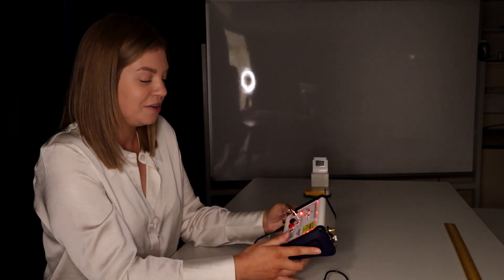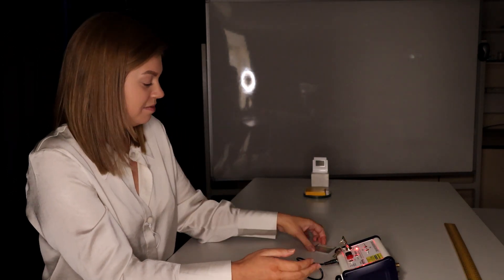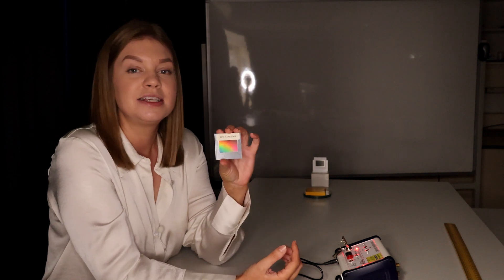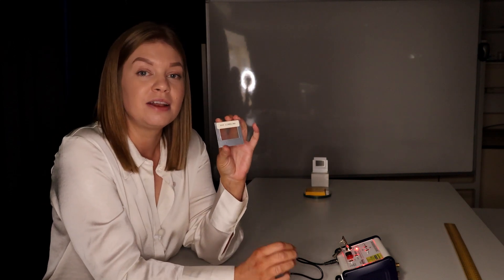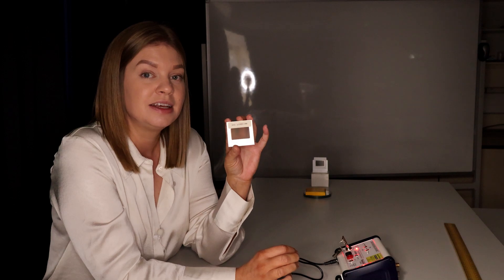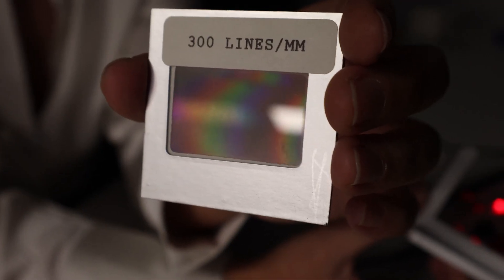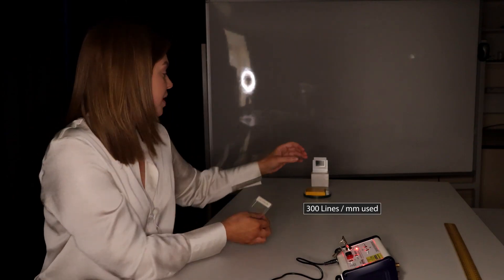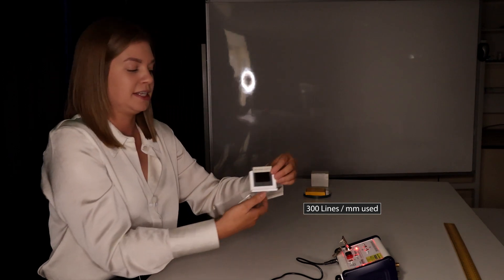Instead of using a double slit like Young, we are going to use one of these, a diffraction grating, and this is an optical component that contains a large amount of equally spaced parallel slits. Now this particular diffraction grating has got 600 lines per millimeter, and we can position it vertically in a slide carrier.